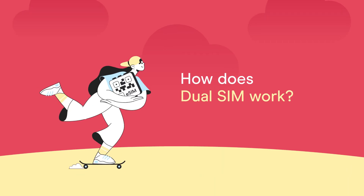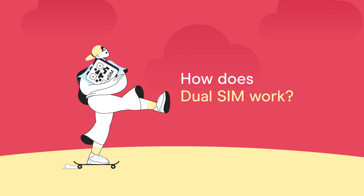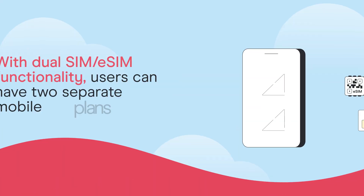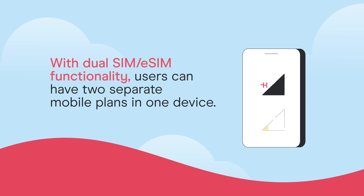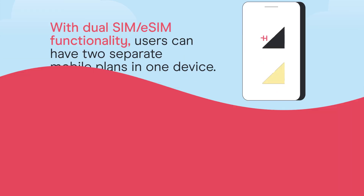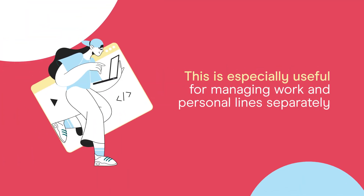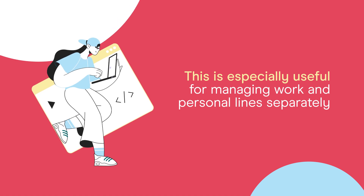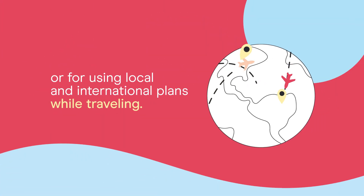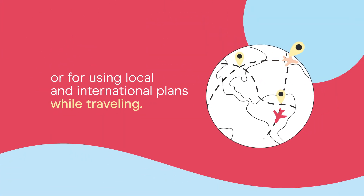How does Dual SIM work? With Dual SIM eSIM functionality, users can have two separate mobile plans in one device. This is especially useful for managing work and personal lines separately, or for using local and international plans while traveling.